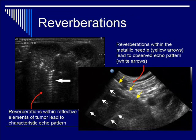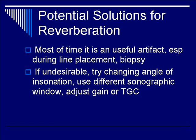The reverberation within the metallic needle leads to the characteristic echo pattern seen earlier, although here the lines are closer together and the diminishing quality is not as clear cut as in the theoretical example. Nonetheless, you can use this characteristic pattern to locate the needle based on the reverberation artifact, helping you find an organ or vessel of interest and properly carry through biopsy or central venous catheterization procedures. In cases where the artifact is undesirable, you can try changing the angle of insonation, use different sonographic windows, or adjust the gain or time-gain slider bars to minimize the signal.